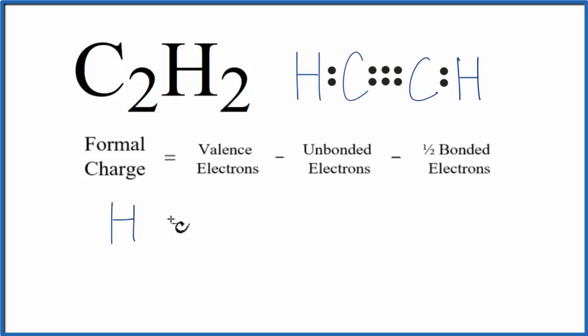Hydrogen, that's in group 1 on the periodic table. That means it has one valence electron. We'll subtract the unbonded valence electrons. All these electrons around the hydrogen, they're involved in a chemical bond between the hydrogen and carbon. So that's zero. And then we'll subtract half of the bonded valence electrons. These two right here, they're involved in the chemical bond.